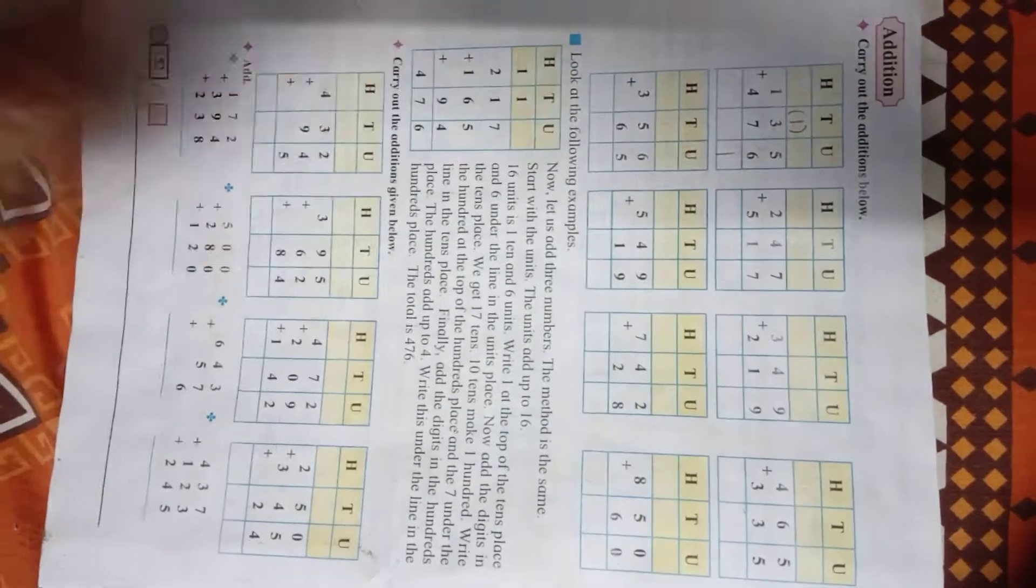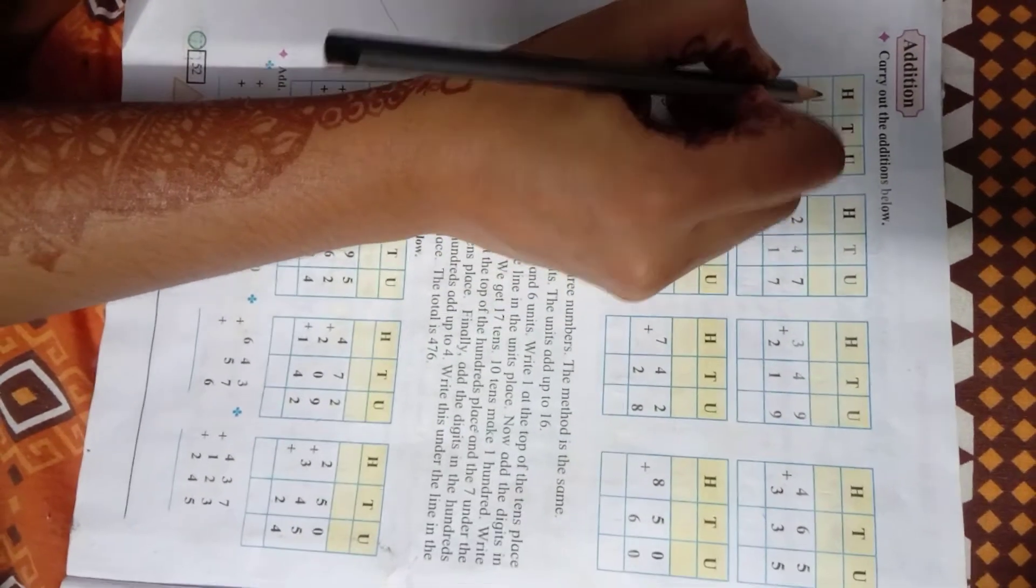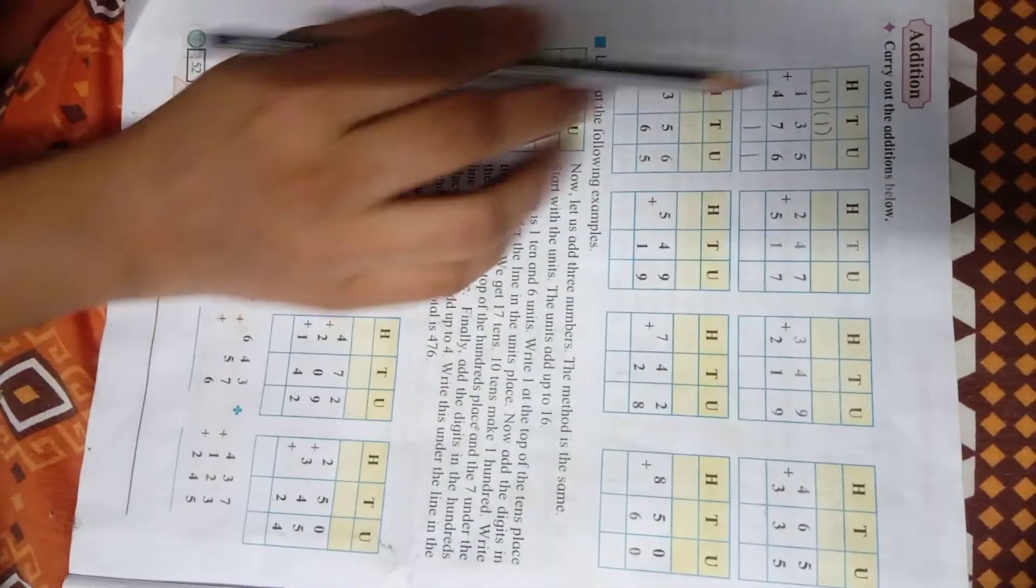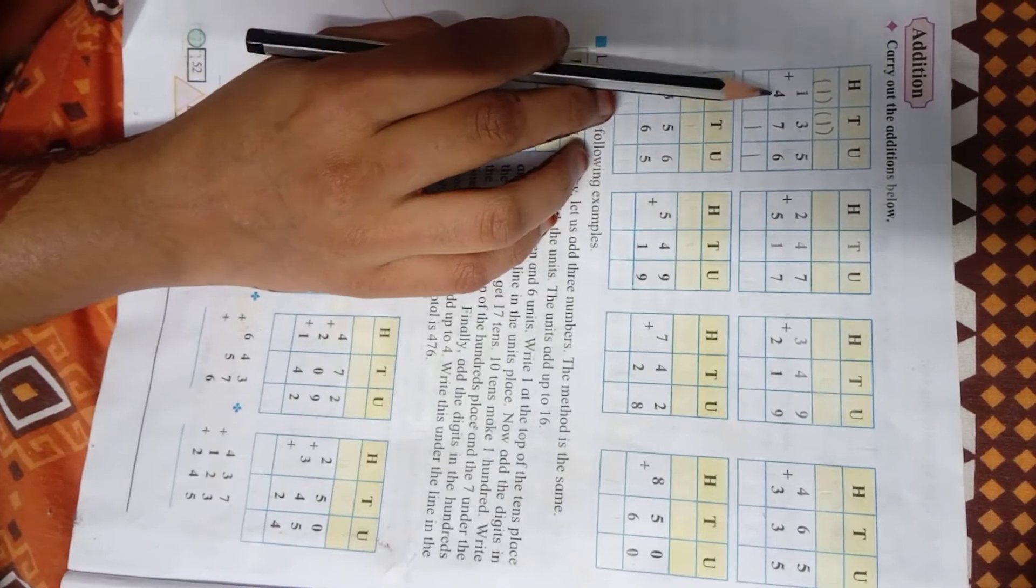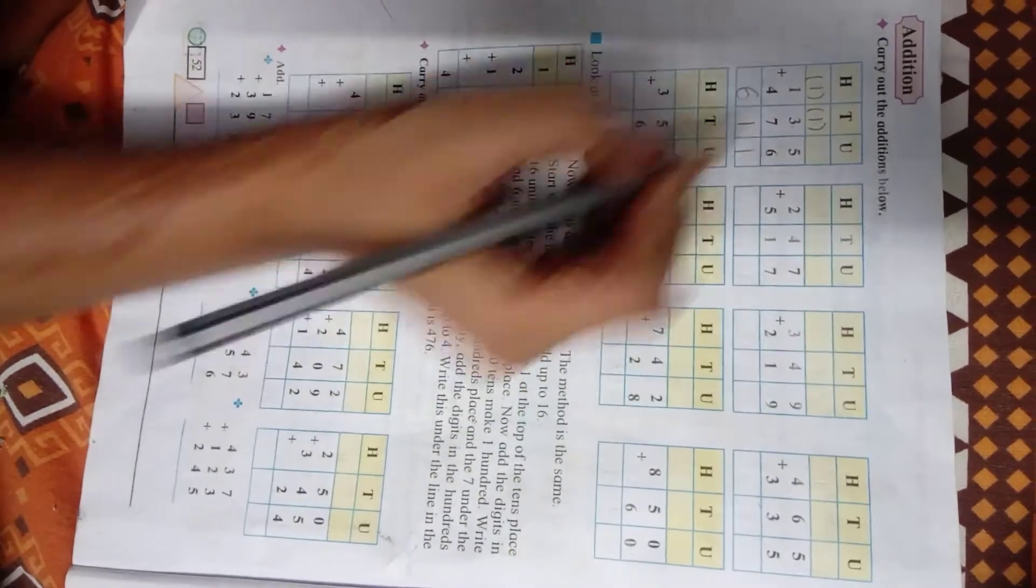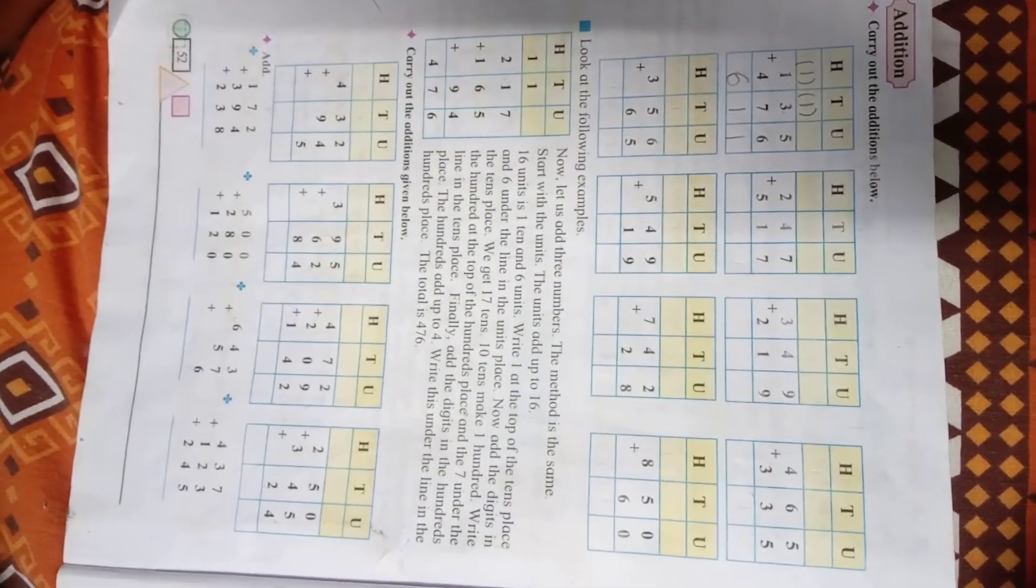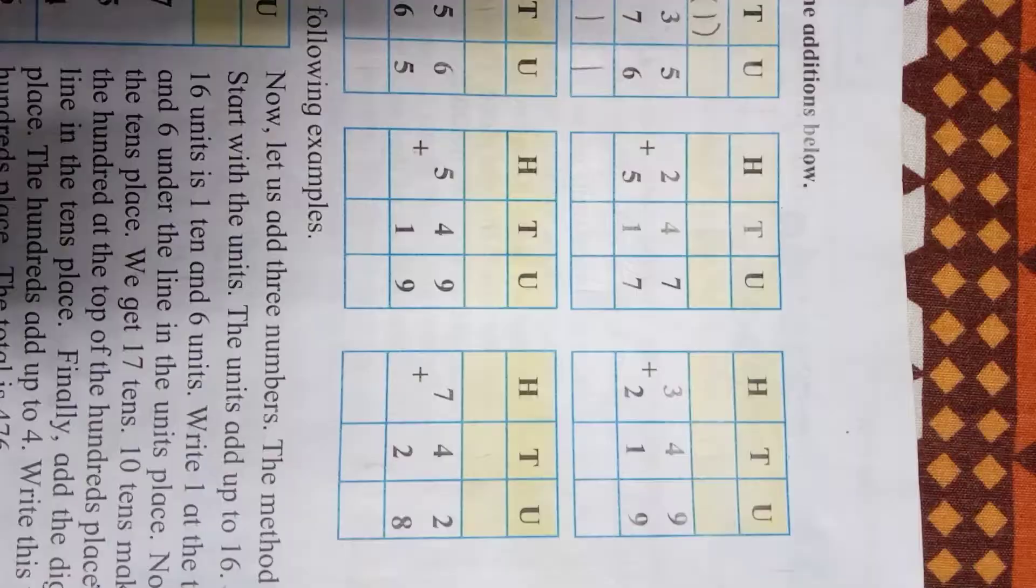So here again we will write 1 and 1 for carry. Then 1 plus 4, how much? 5. And 5 plus 1? 6. So what is the answer? 611.